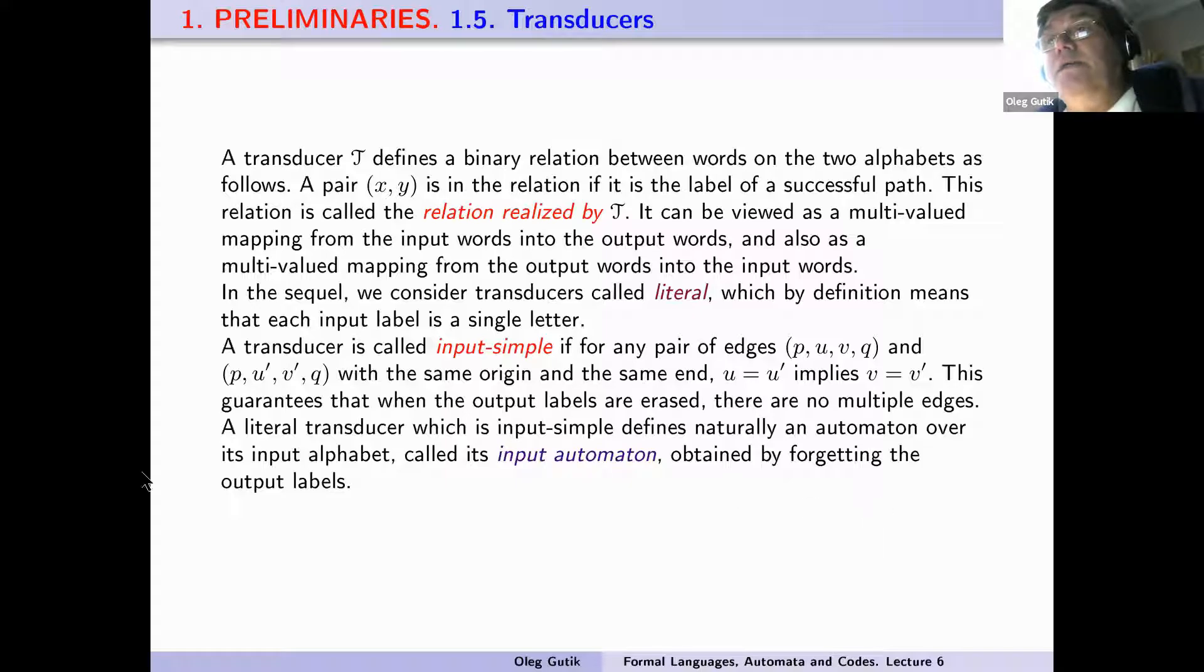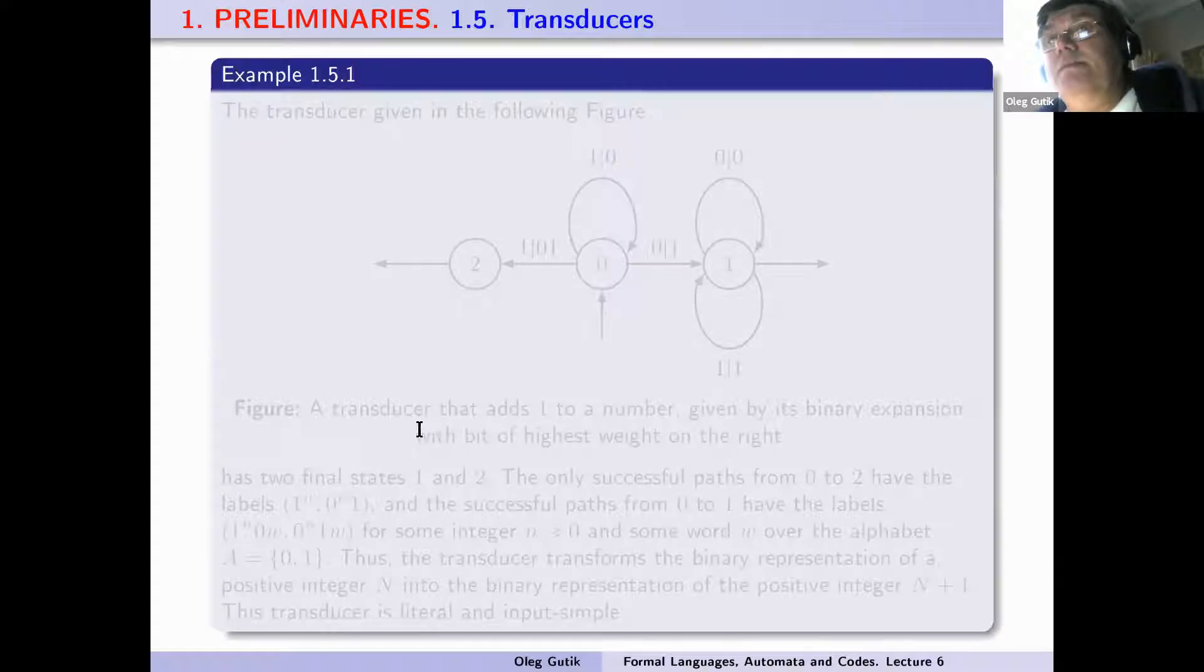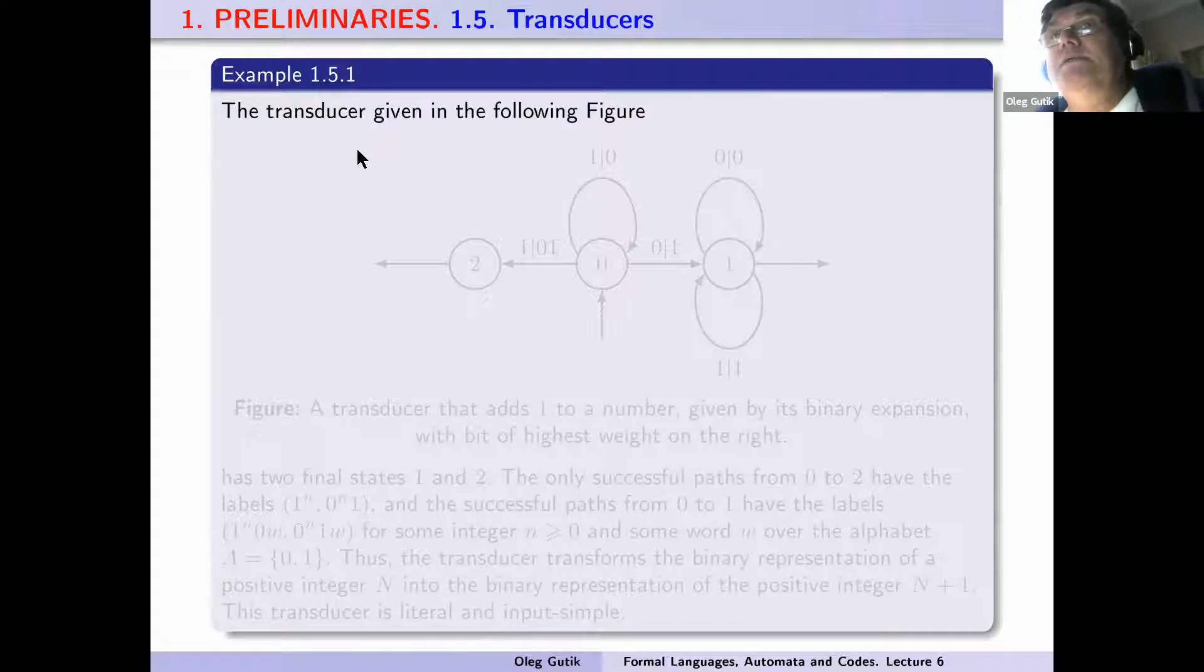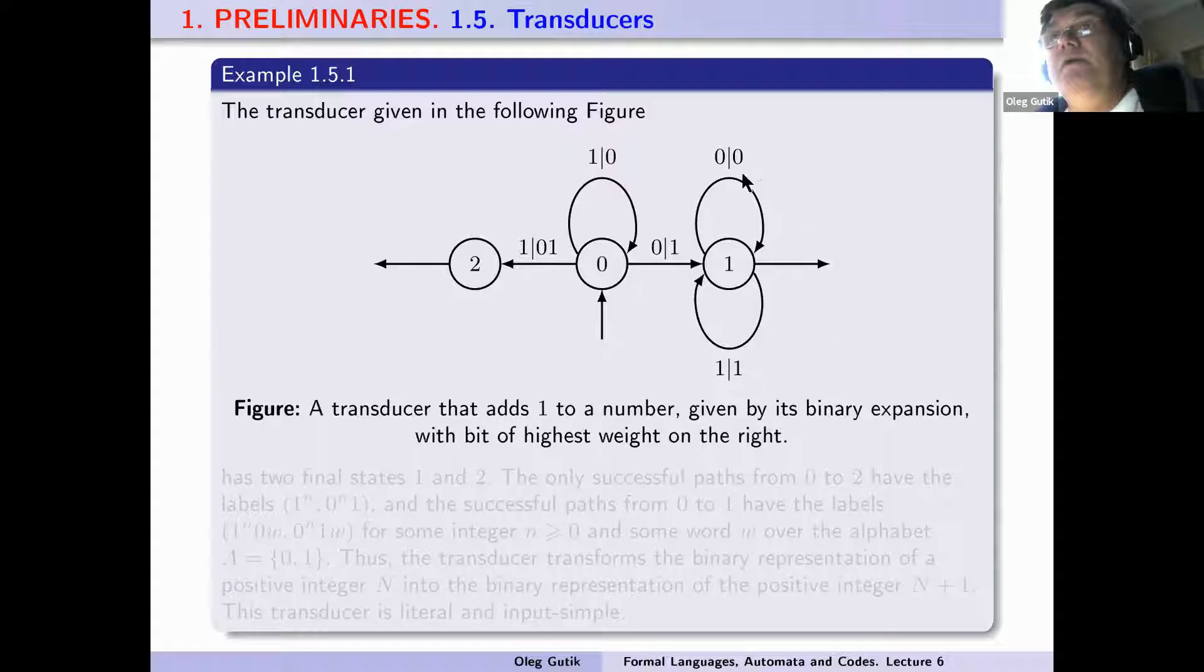A literal transducer which is not input-simple defines naturally an automaton over the input alphabet by forgetting the output labels. Next, we give a very simple example of a transducer. Example 1.5.1: The transducer given in the following figure has two final states, 1 and 2.